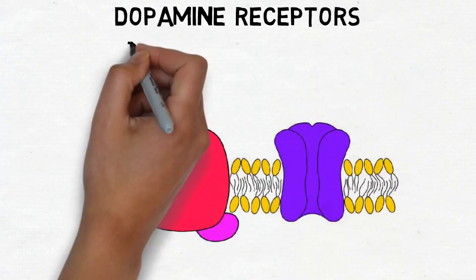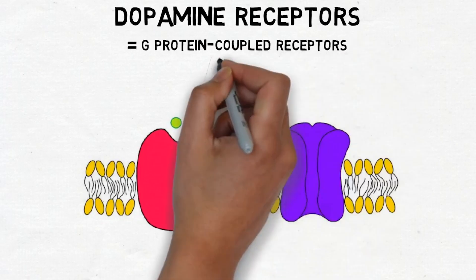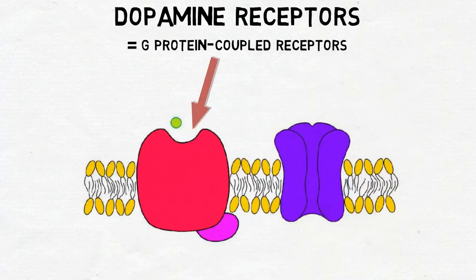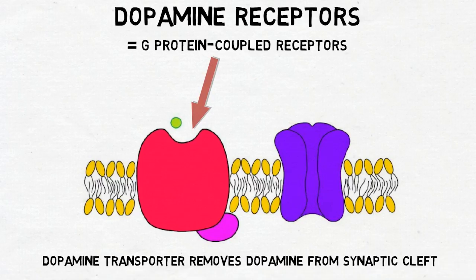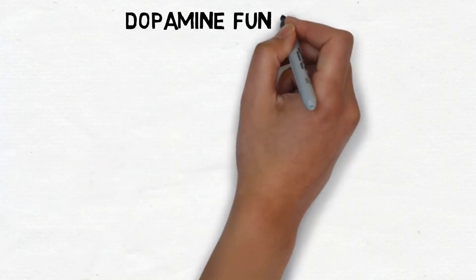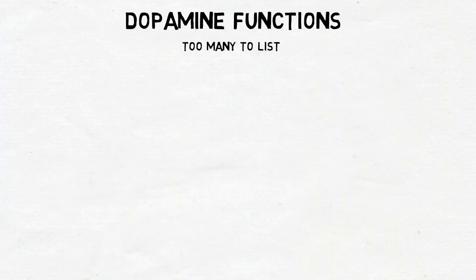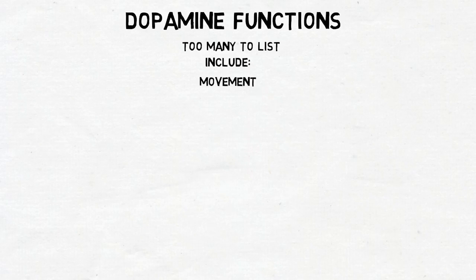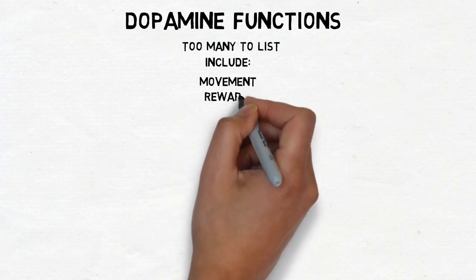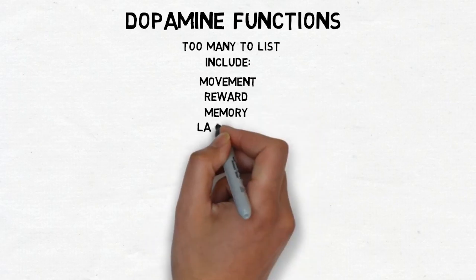Dopamine acts at G-protein-coupled receptors, and there are at least five subtypes of the dopamine receptor. Dopamine is removed from the synaptic cleft by a transporter protein called the dopamine transporter. Like any neurotransmitter, the functions of dopamine are complex and can't be fully explained with just a short summary. Dopamine is linked to movement due to disorders like Parkinson's disease that involve dopamine deficiencies. It is also often associated with the processing of rewarding experiences, although dopamine also plays a role in many other functions.